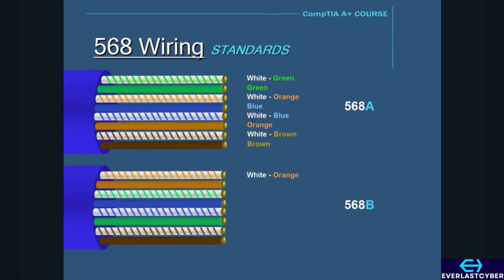The 568B standard is wired in the following order: white/orange, then orange, white/green, blue, white/blue, green, white/brown, and brown.